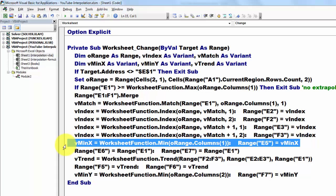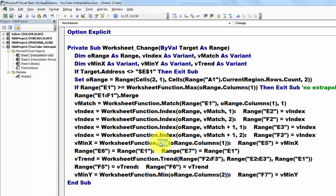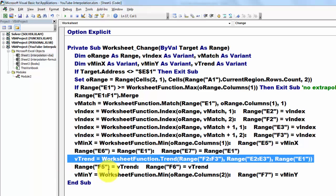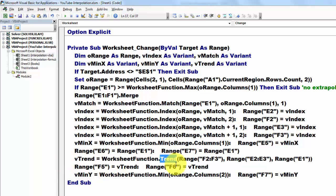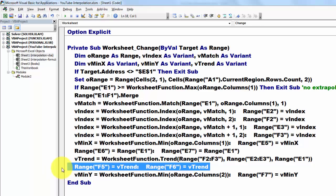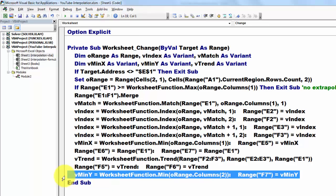Then we put the MIN value in there by using the MIN function. Then we put in range E6 and range E7 the values. Then we calculate the trend by using the TREND function, which I explained earlier. Put the values in the cells that need that value. And then we calculate the MIN value in the second column.